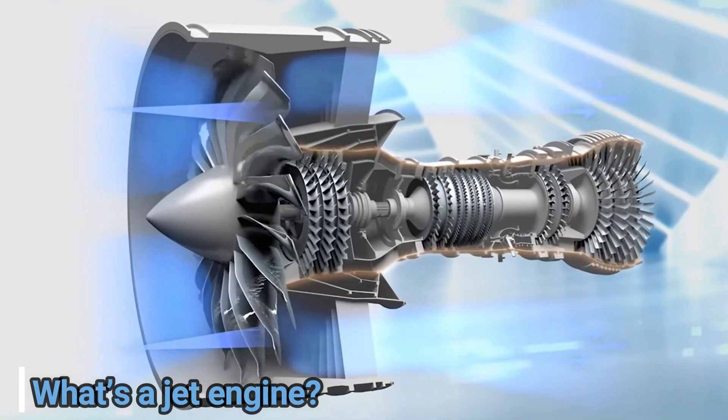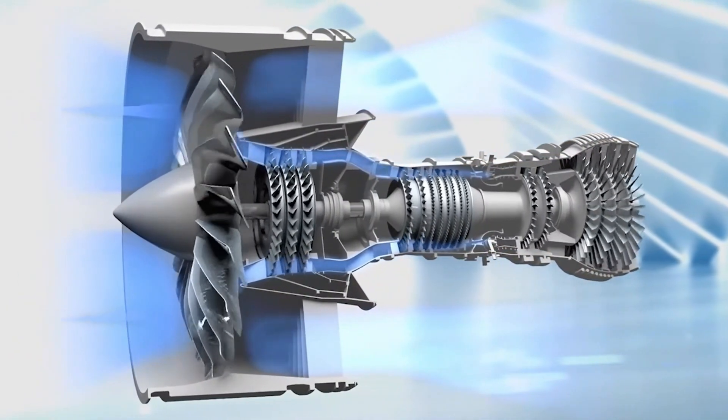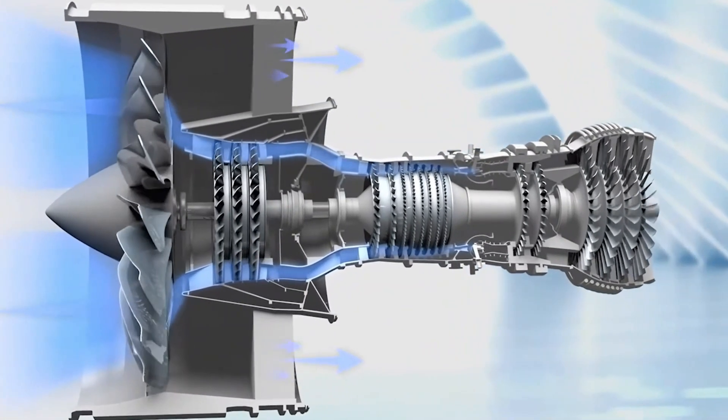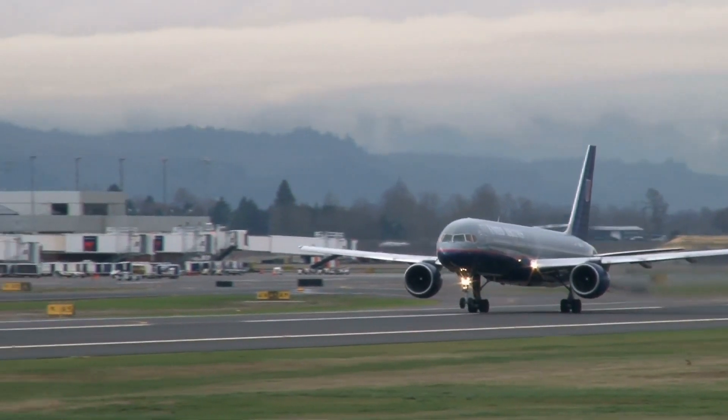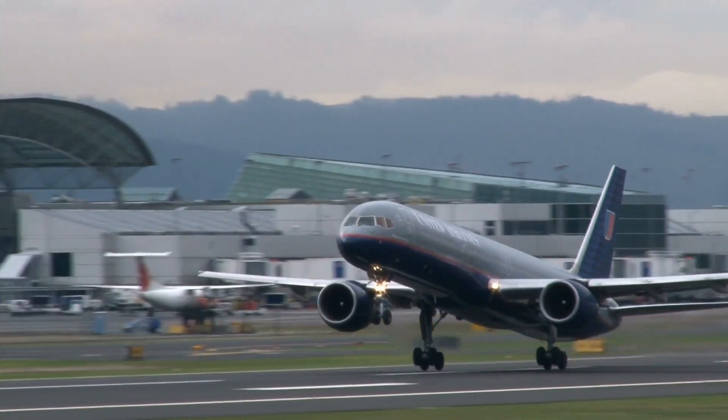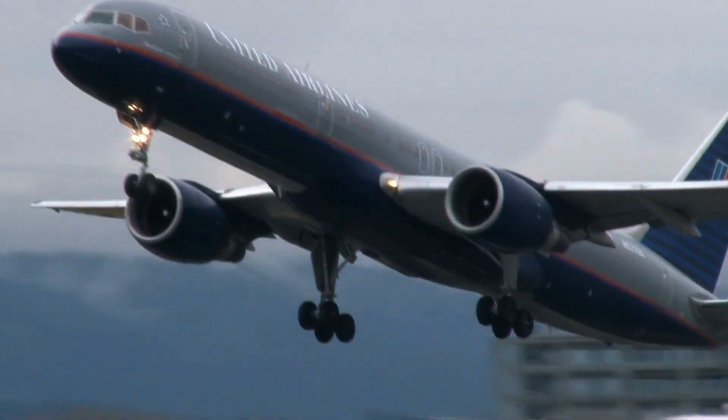A jet engine is a machine that converts energy-rich liquid fuel into a powerful pushing force called thrust. The thrust from one or more engines pushes a plane forward, forcing air past its scientifically shaped wings to create an upward force called lift that powers it into the sky.